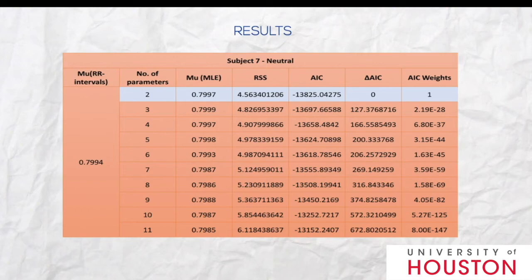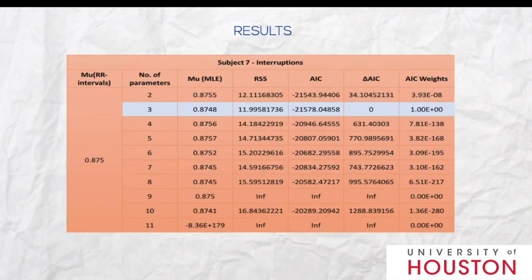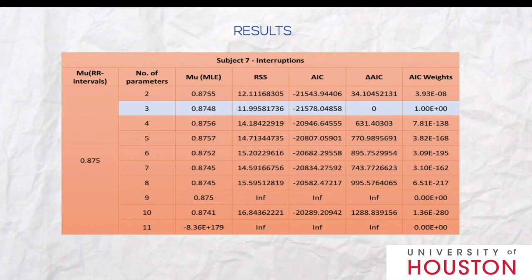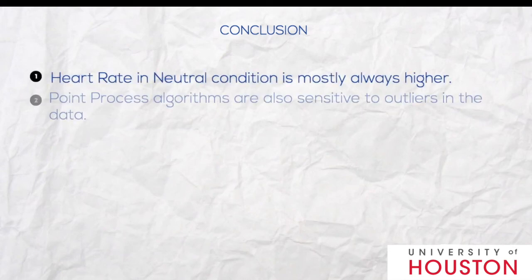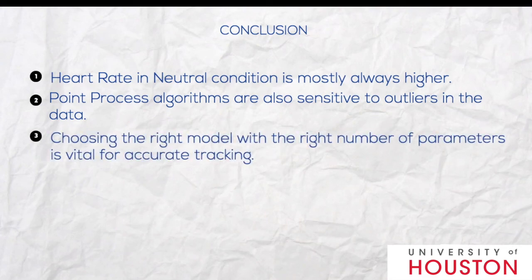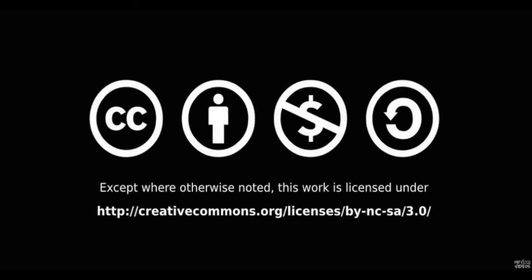In order to select the right model with the right number of parameters, we use the Akaike Information Criterion (AIC) formulation applied to the MLE algorithm. As expected, each file has a different best-fit model with a different number of parameters for different conditions. We conclude that heart rate in the neutral condition is mostly higher, and the point process algorithm is also sensitive to outliers in the data. Choosing the right model with the right number of parameters is vital for accurate tracking.